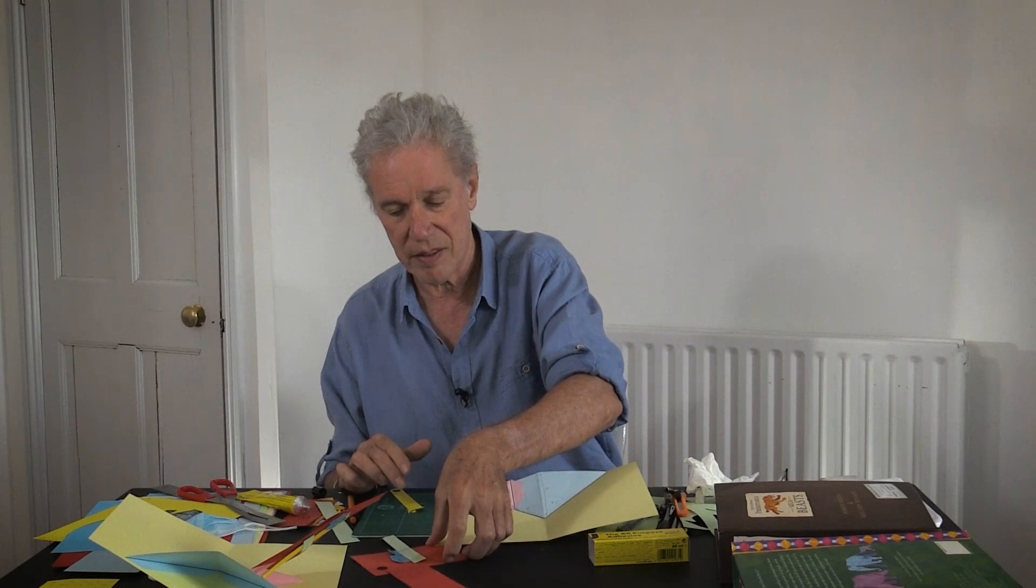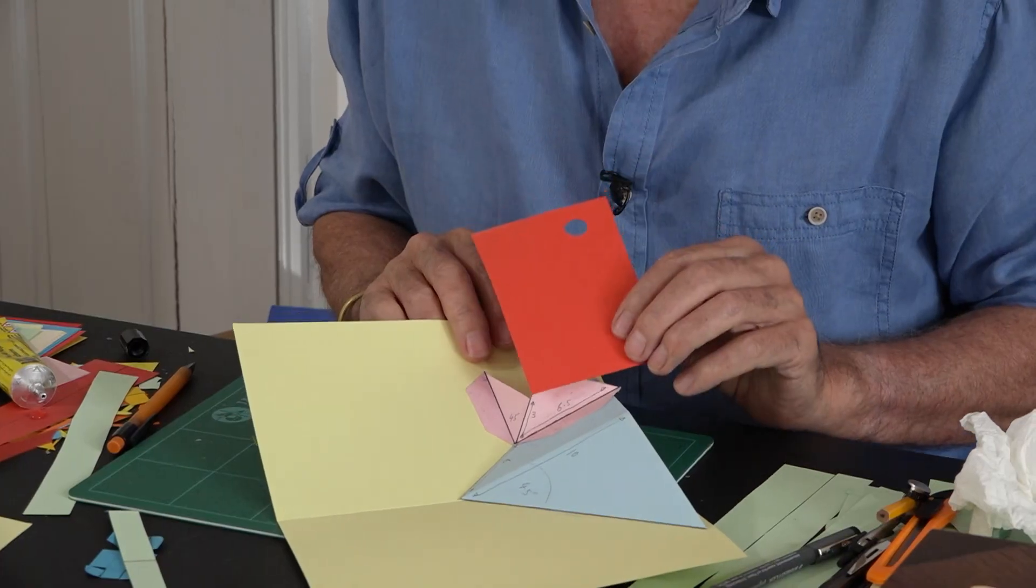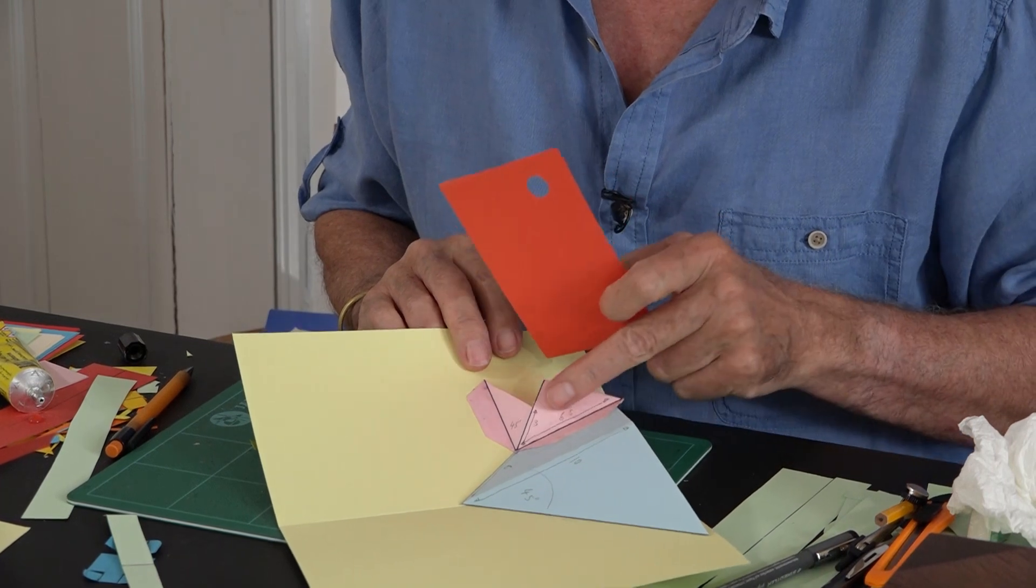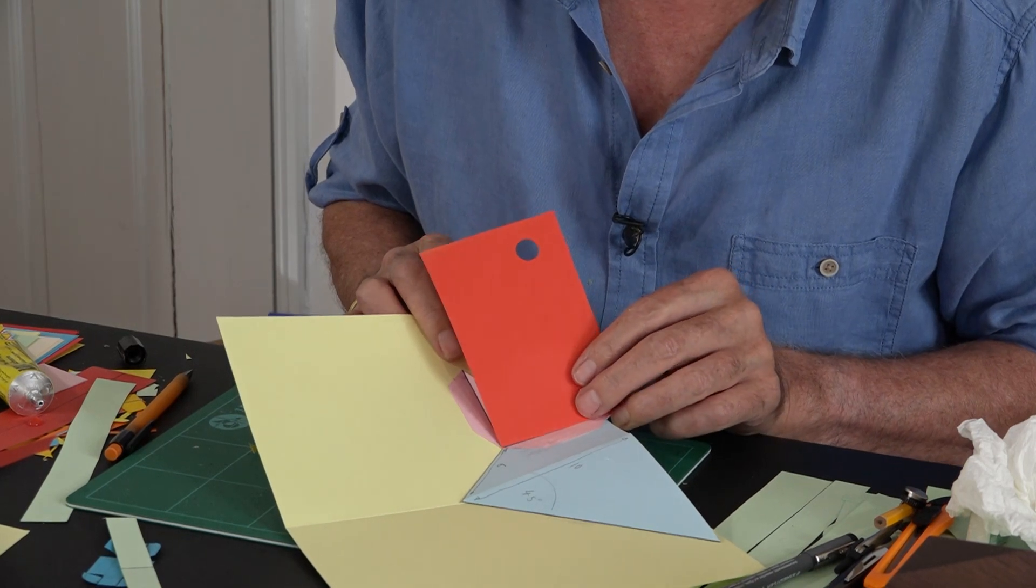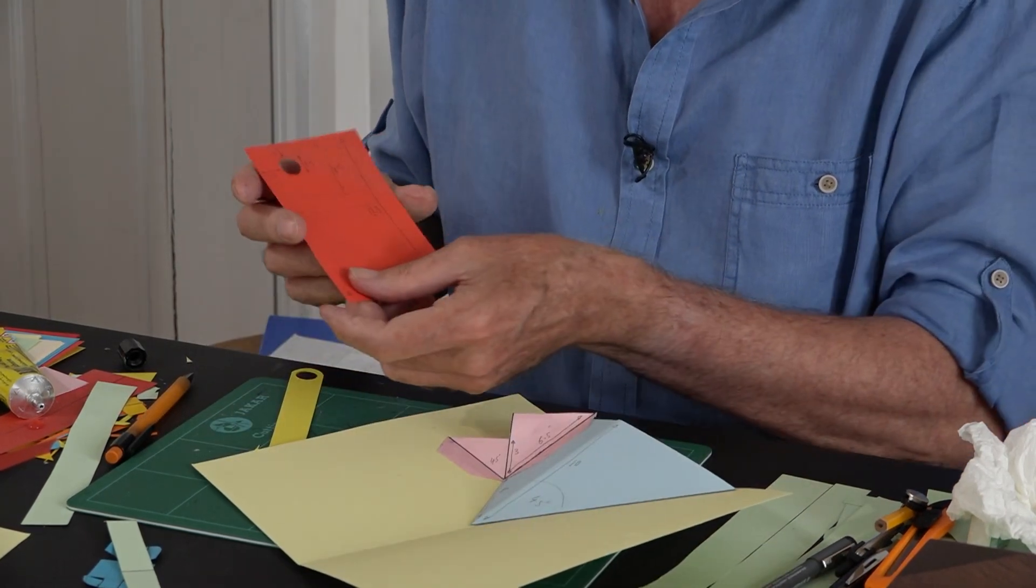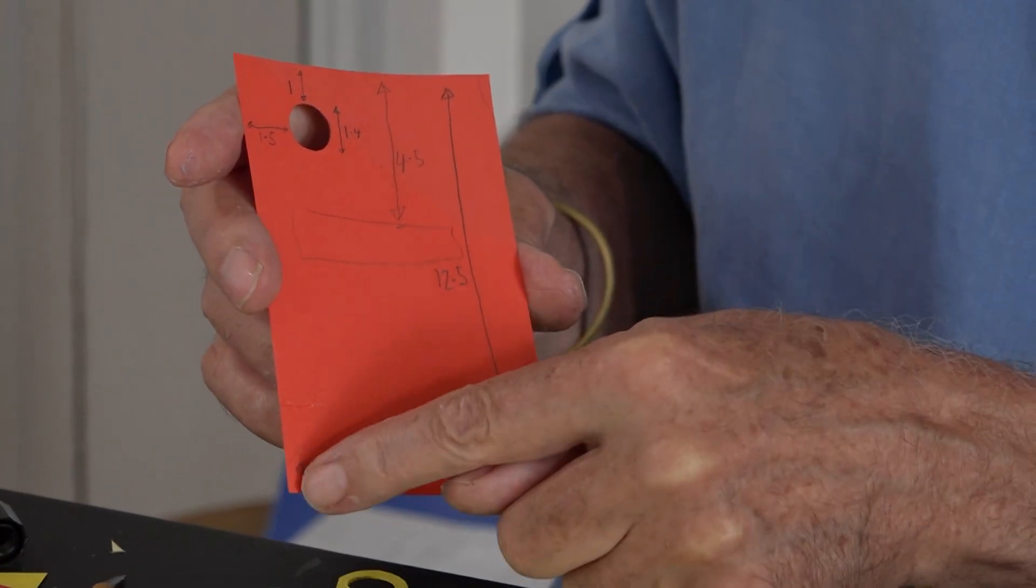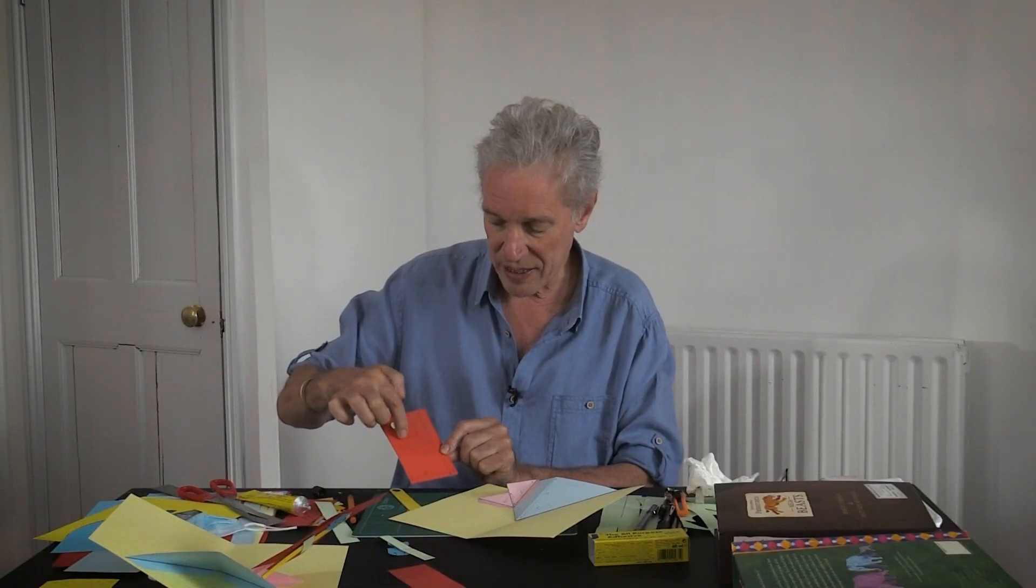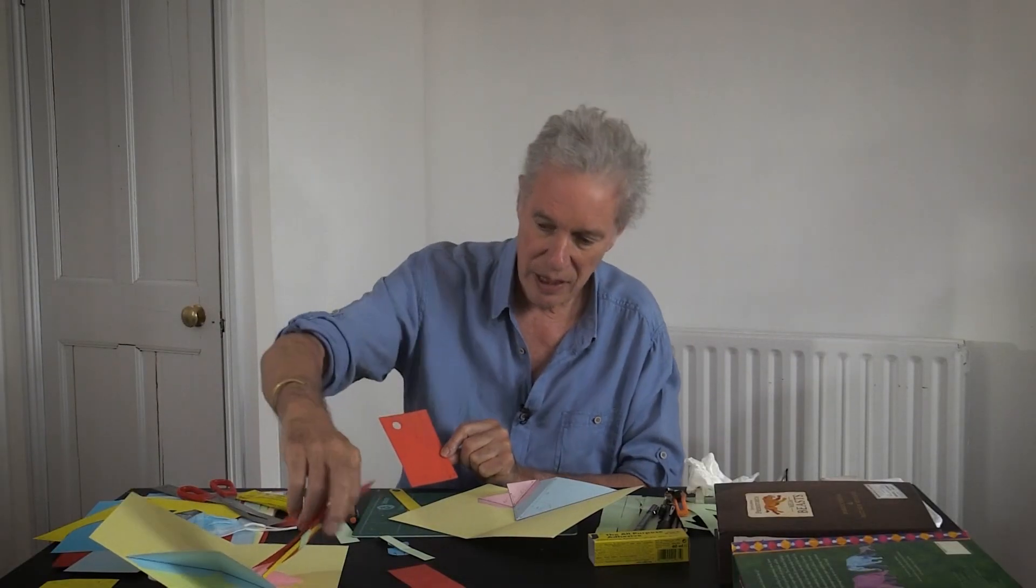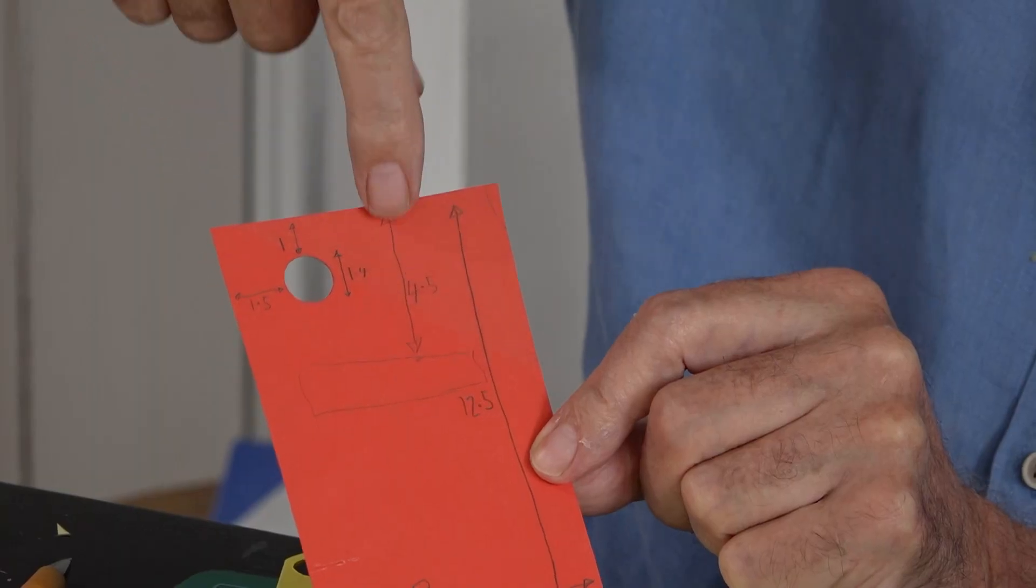This is the big red piece. This is going to glue on against the large side of the pink triangle. This corner is going to go into that corner there. The dimensions: it's 12 and a half centimeters high, it's eight centimeters wide, where you stick on the green sleeve. The top of the green sleeve is four and a half centimeters below the top.